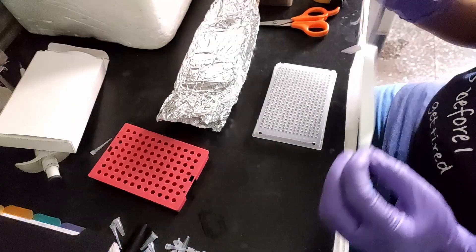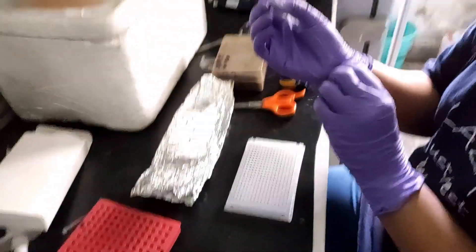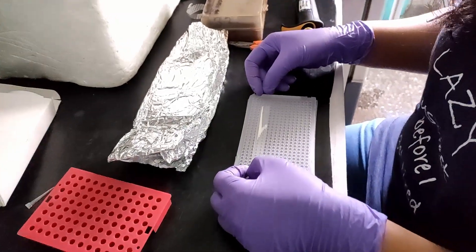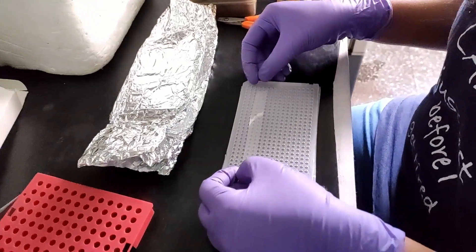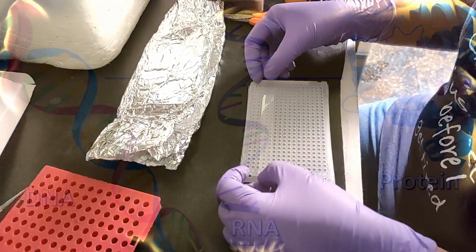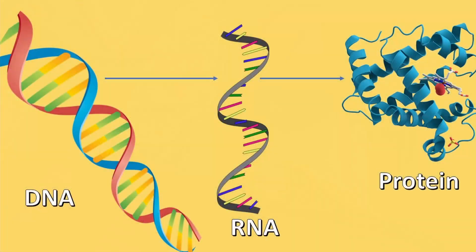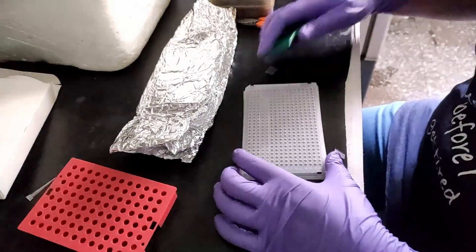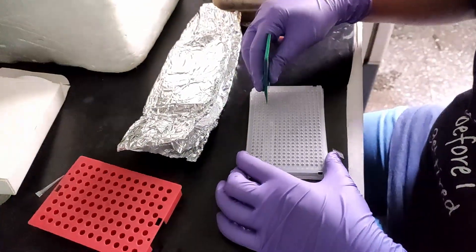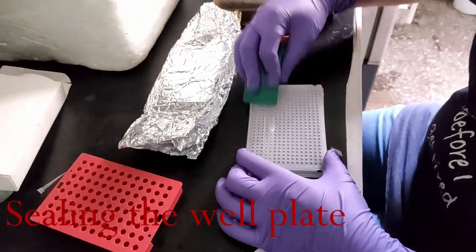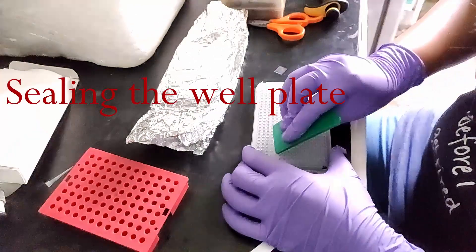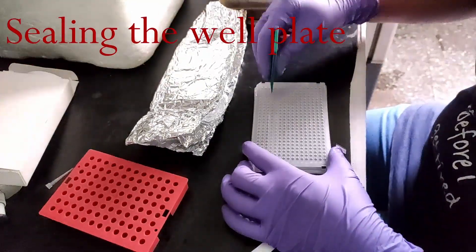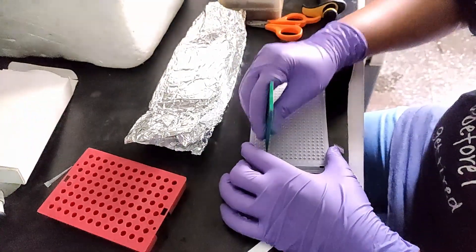RT-PCR is also used in basic research, such as cancer research. When we want to study a specific gene, we can do it at different levels — such as the protein level, the RNA level, or the gene level. When we study it at the RNA level, we use this technique. In this technique, we basically quantify the levels of RNA.